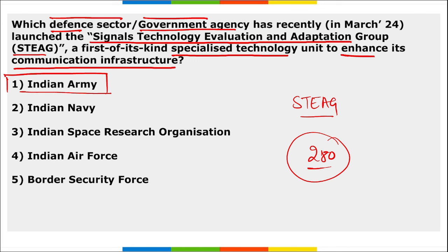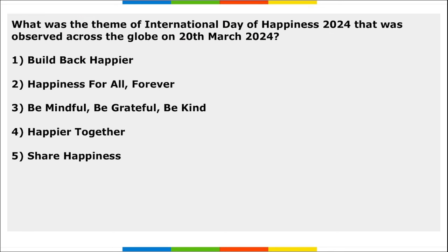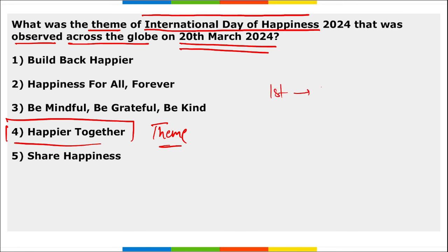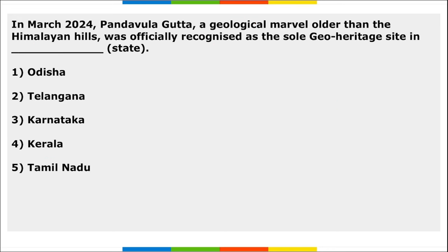The theme of the International Day of Happiness observed on 20th March 2024 was 'Happier Together.' This day was first observed in 2013.